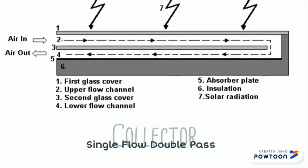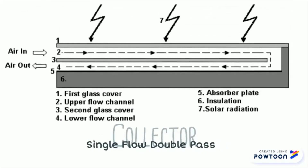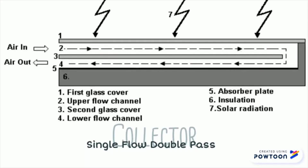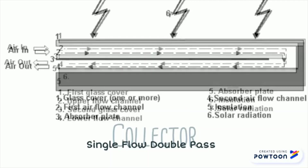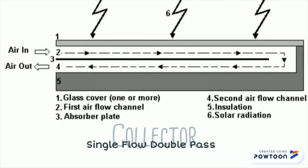Single flow double pass. Air flows from the upper channel, changes direction at the channel end, and enters the lower channel. The two channels can be separated by a second glass cover or by the absorber.